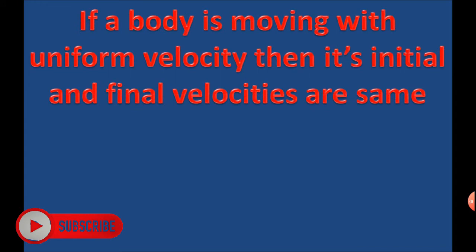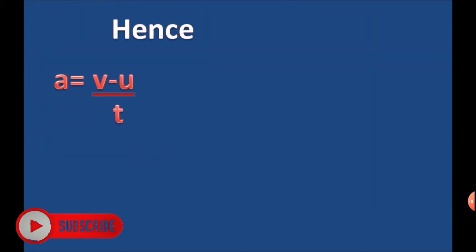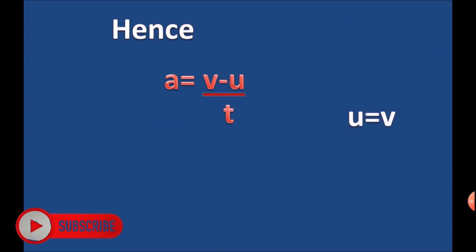If a body is moving with uniform velocity, then its initial and final velocities are the same. In uniform velocity, u = v. Hence acceleration a = (v - u) / t. Since u = v, therefore a = 0/t = 0. The acceleration of a body moving with uniform velocity is zero because initial and final velocities are the same.